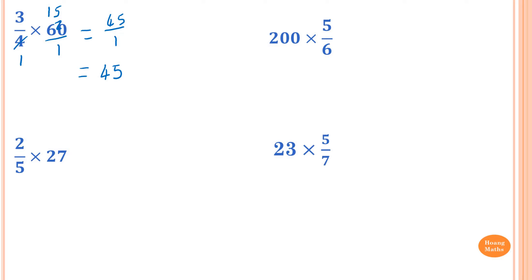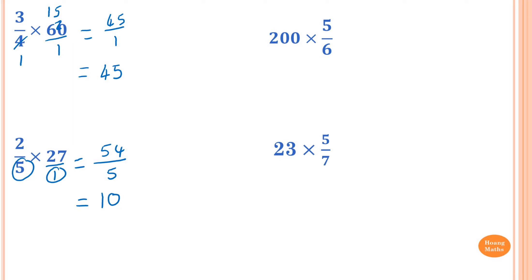2 over 5 times 27. So 27 is equal to 27 over 1. We cannot simplify, so what we do is multiply the numerators together and the denominators together. So 27 times 2 is 54, and 1 times 5 is 5. So now we just need to write it as a mixed numeral. 5 goes into 54: 5 goes into 54 is 10 times, with remainder 4. So the answer is 10 and 4 over 5.